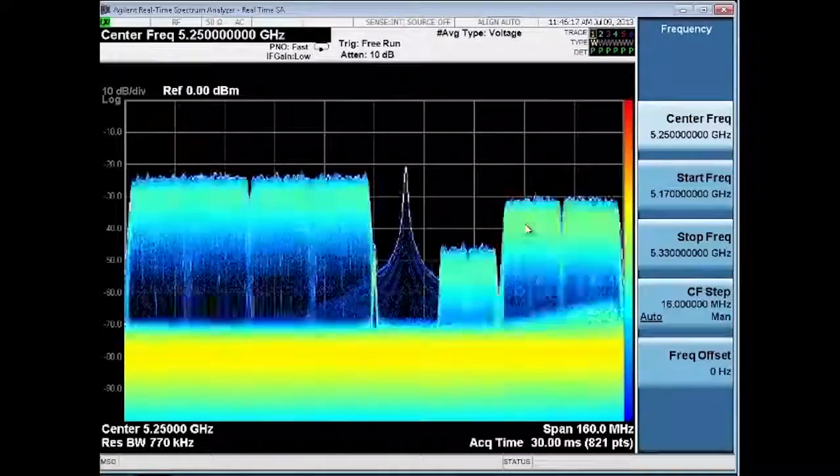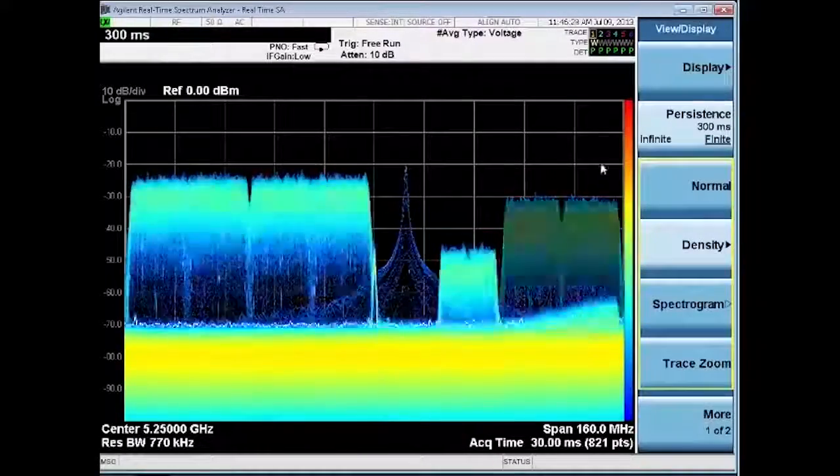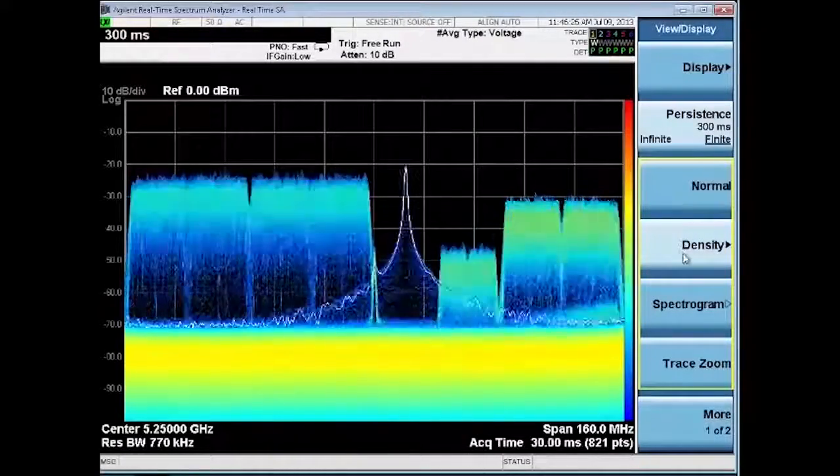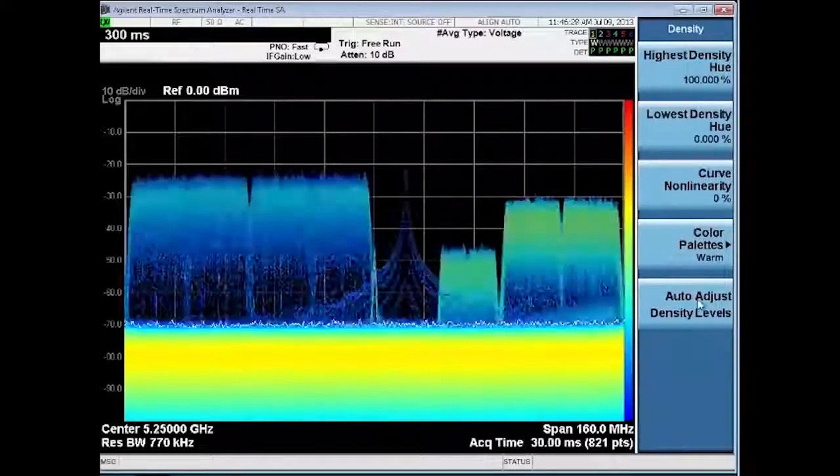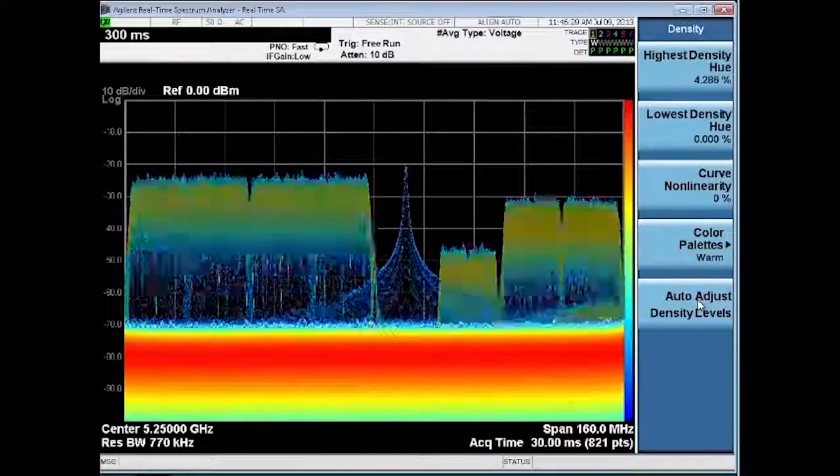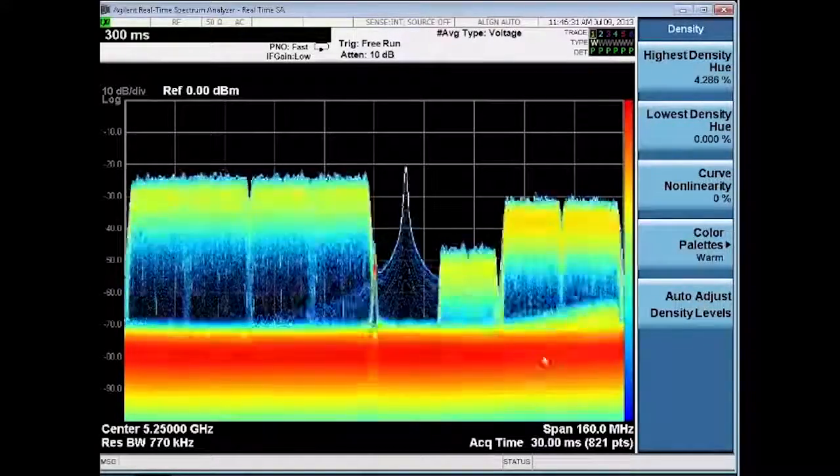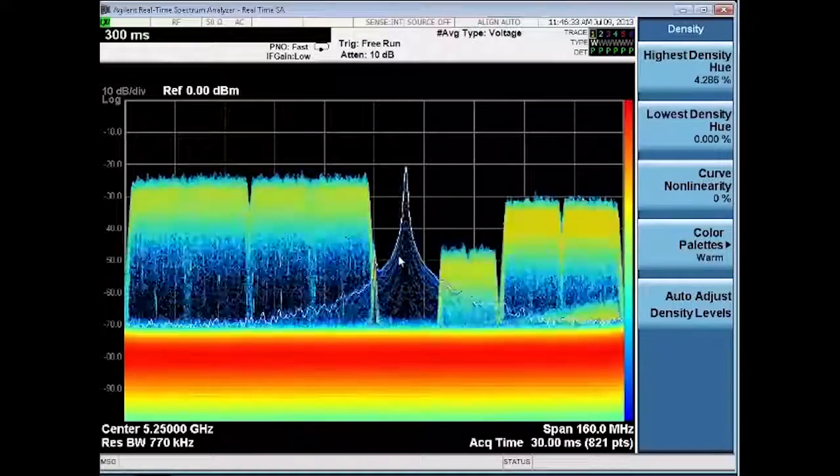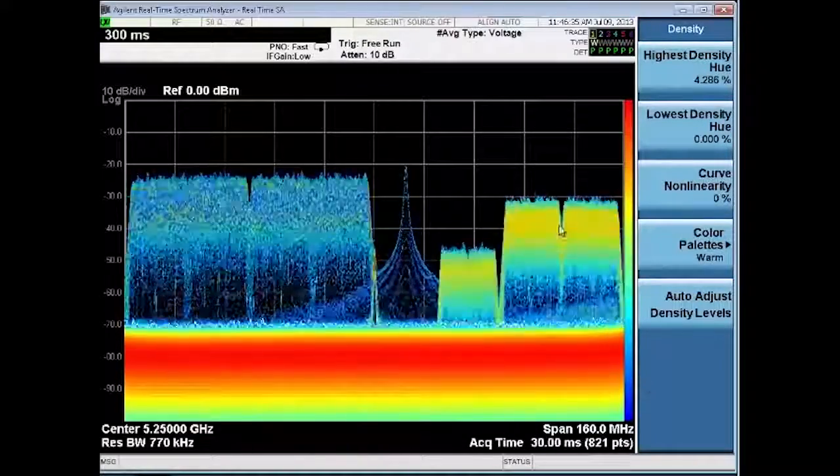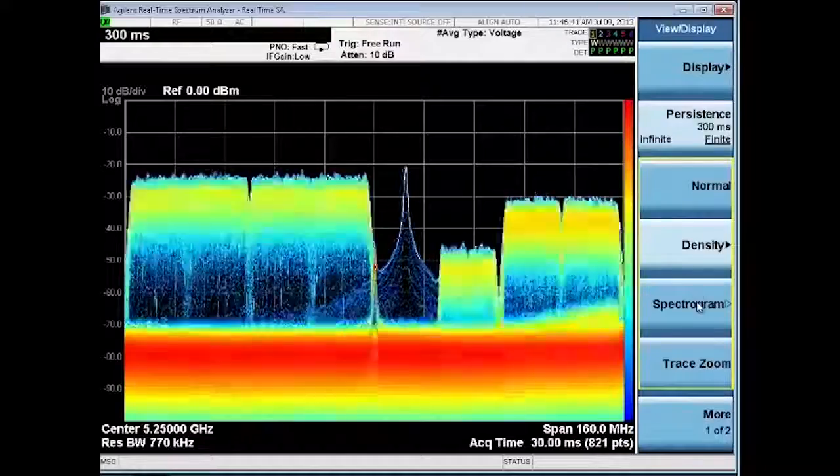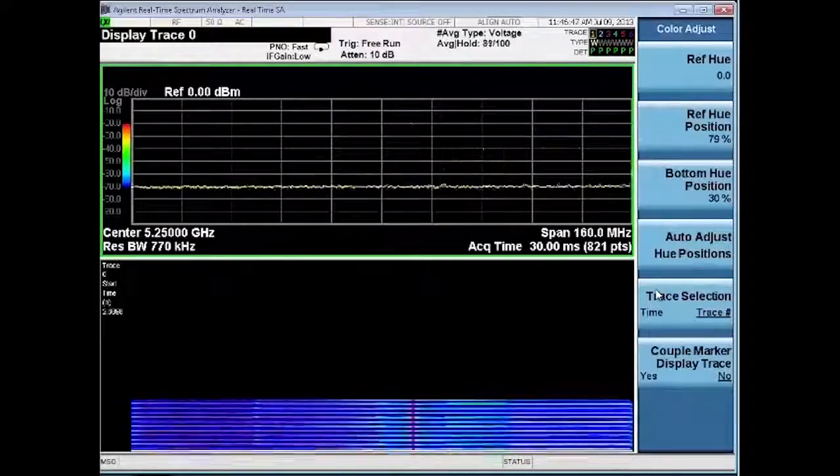In real-time, we have not only an opportunity to see all the bursted signals, but we also see interference. A common issue is interference between wireless LAN and radar signals. With the real-time MXA, you can see how these signals interact, identify how the wireless LAN signals respond, and measure the transient activity in the real-time spectrogram display.